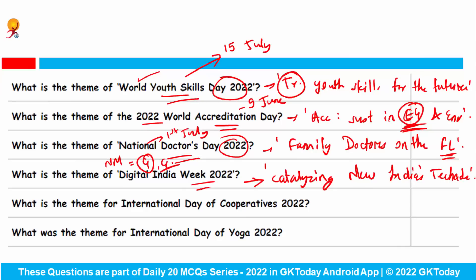What is the theme of the International Day of Cooperatives 2022? We observe this every year on the first Saturday of July. This year it was celebrated on the second of July and the theme was 'Build a Better World'.